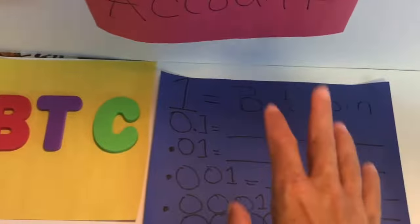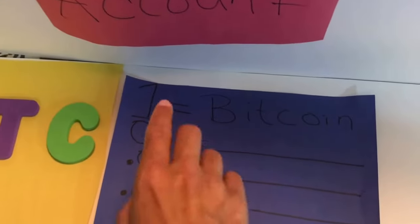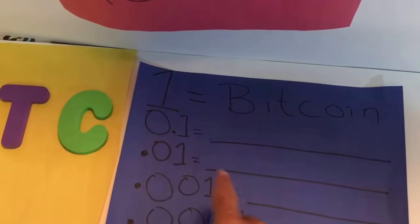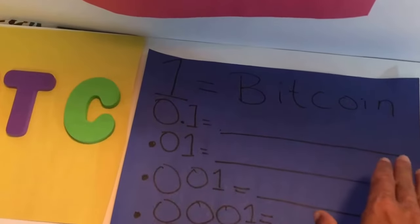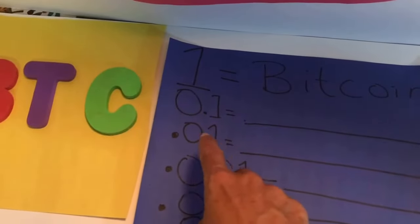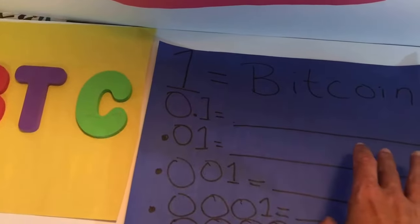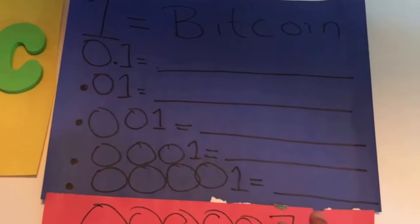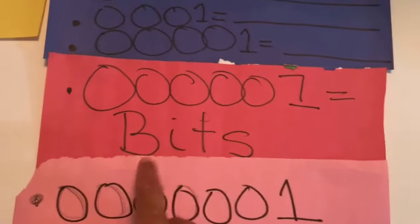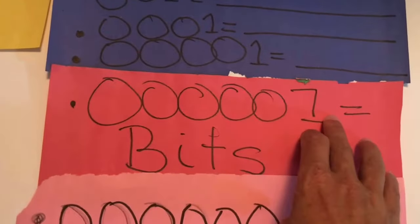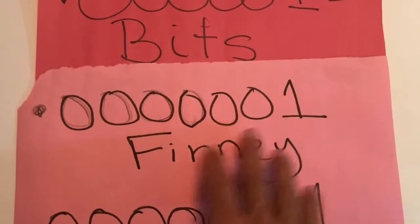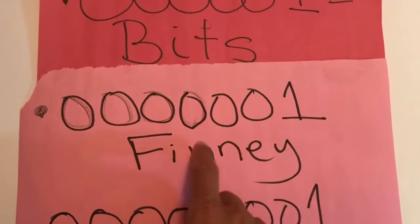Bitcoin already has some designations: one unit is Bitcoin, 0.1 is called a 'bit cent' — which is a bit silly — and 0.001 is a 'millibit.' Further down, around 0.0001, you get to 'bits,' and at six decimal places you get the 'finney,' named after Hal Finney, which is a derivative of Bitcoin.